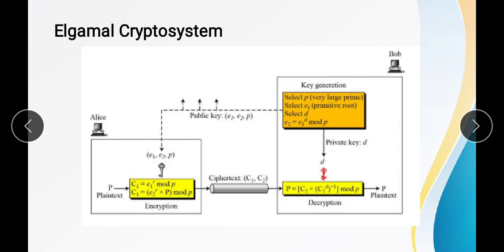We can understand the process of the ElGamal system using a block diagram. It has three parts: key generation, encryption, and decryption. At the receiver side (Bob), the key generation process involves: first selecting p, a very large prime number; second, e1, which is a primitive root used as part of the encryption key; and third, d, which is the private key used for decryption.